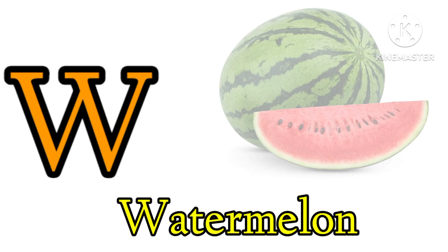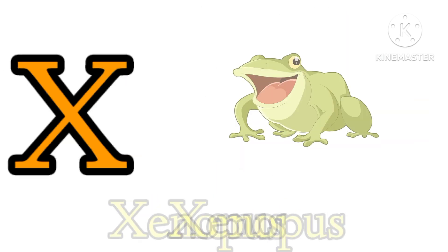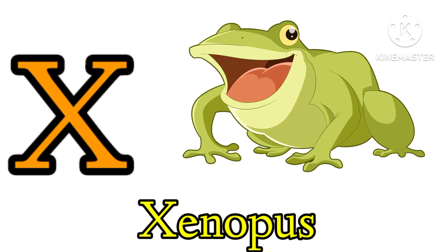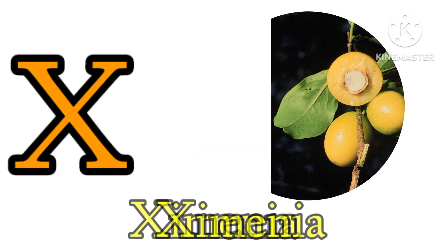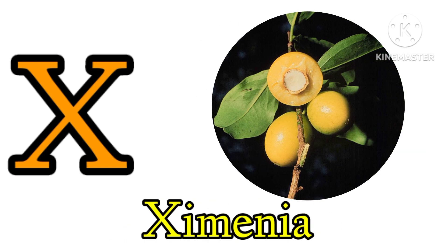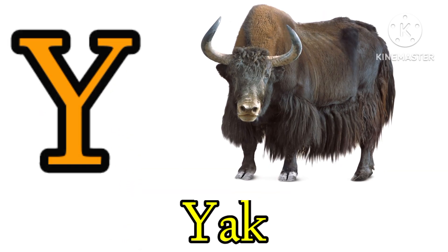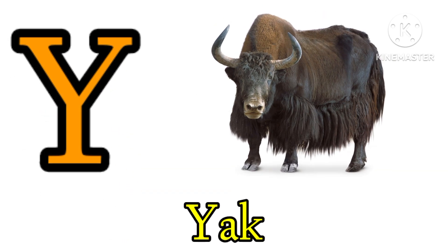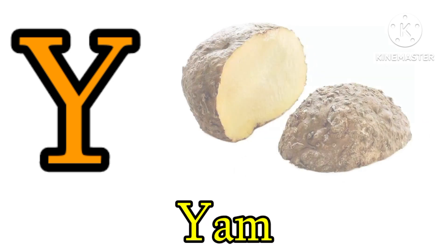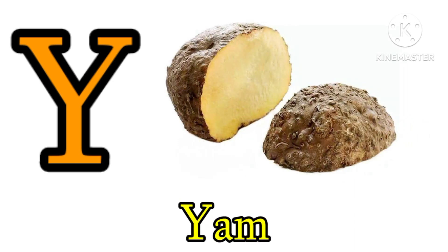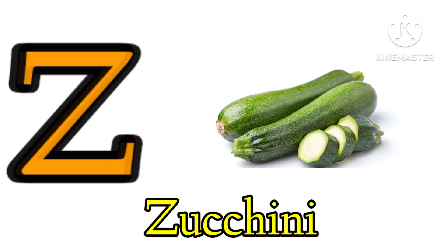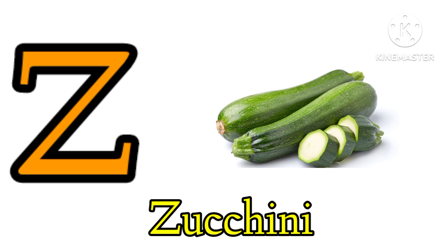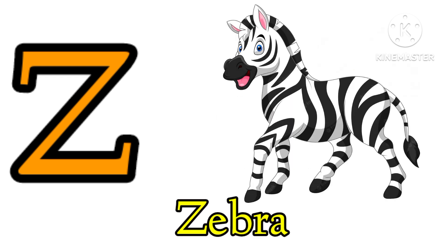U for Watermelon. X for Pottery, X for Xenopus. X for Ximenia. Y for Yak, Y for Yam. Z for Zucchini, Z for Zebra!